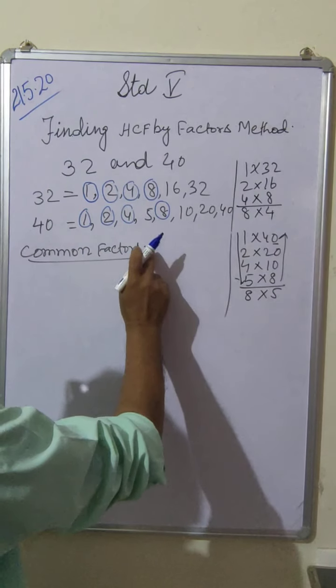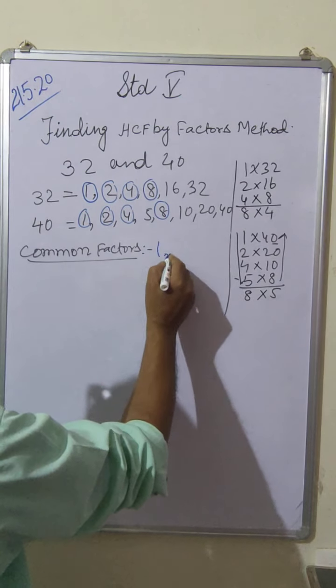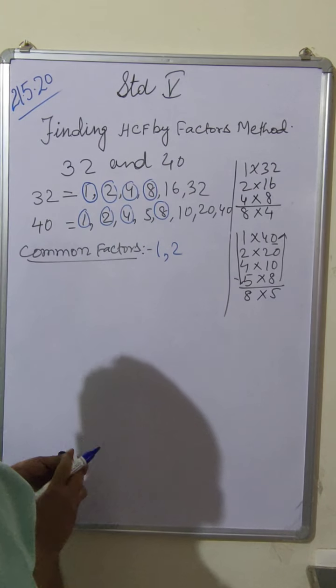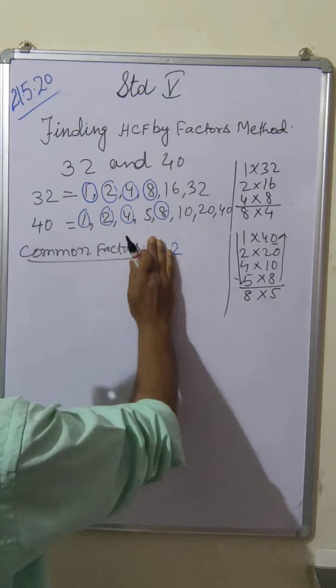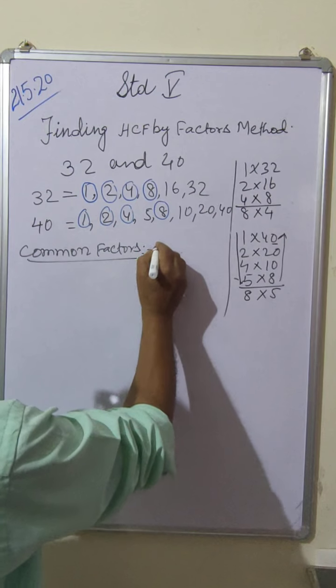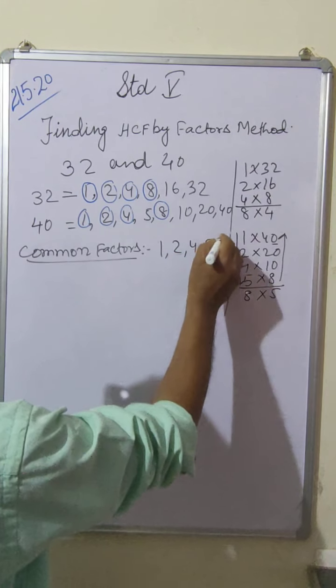So you have to make a list of all the common factors: 1, 2, 4, 8.